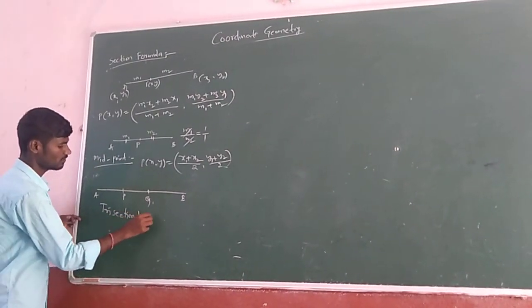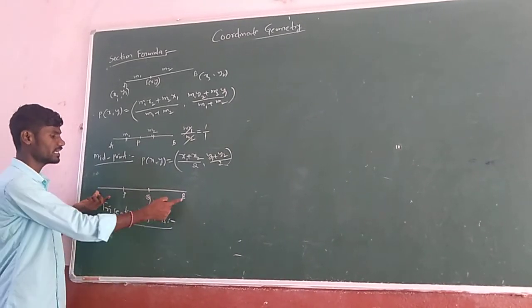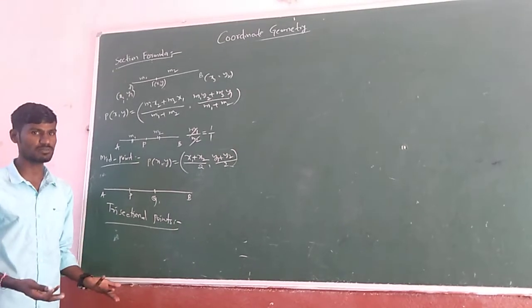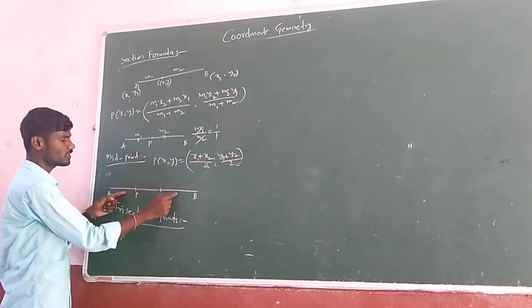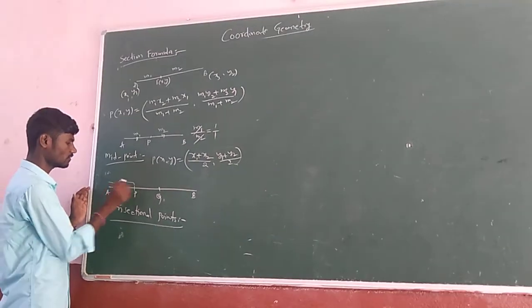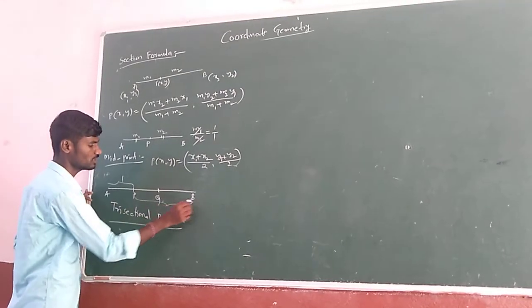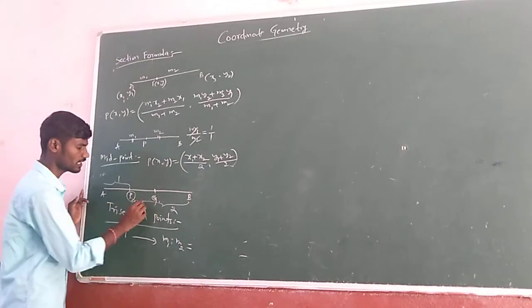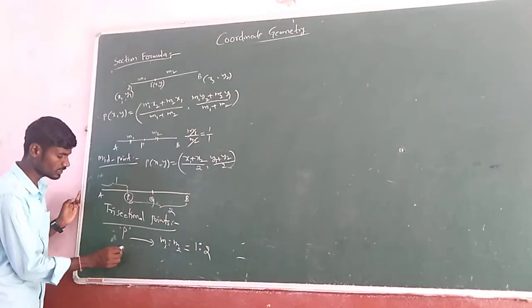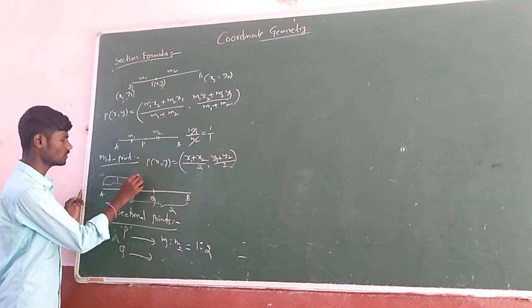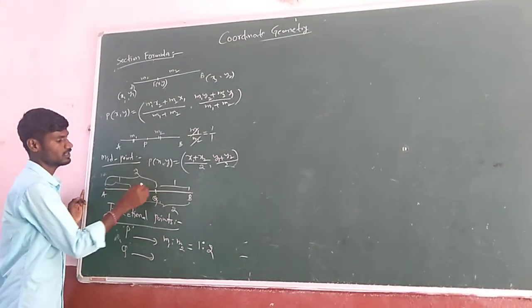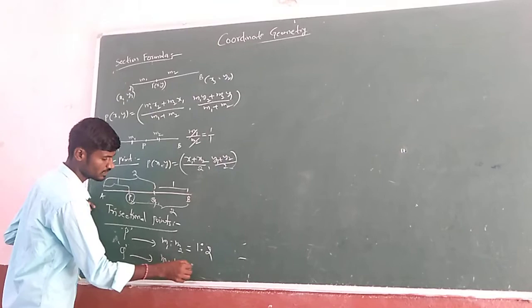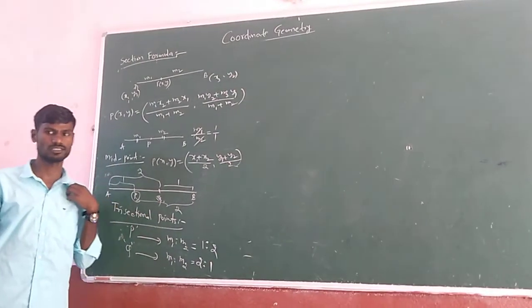What are trisectional points? A line joining between A and B is divided into 3 equal parts with the 2 given points P and Q. Then P and Q are said to be trisectional points. Trisectional points, nothing but these 3 parts are equal. Nothing but 1, 1, 1. Totally it is into 3 equal parts. Nothing but if you take up to A to P, that is 1st part. From P to B, how many parts? 2 parts. So to find P, we have to apply the ratio M1 is to M2, 1 and 2. Means 1 is to 2. To get point Q, from A to Q it is how many parts? 2 parts. From Q to B, it is 1 part. So to get Q, from A to Q 2 parts, Q to B 1 part. So M1 is to M2, we will get in the ratio of 2 is to 1. So this is a trisectional point.